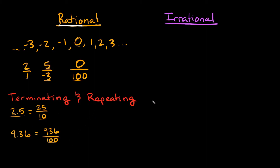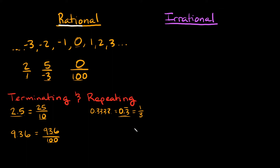Now let's move on to repeating decimals. If I had something like 0.3333 going on forever, I can write this as 0.3 with a repeating bar over it. This is a rational number because I can write it as a ratio of two integers: 1 over 3. So 0.3 repeating and 1 over 3 are equal to each other, making it a rational number.